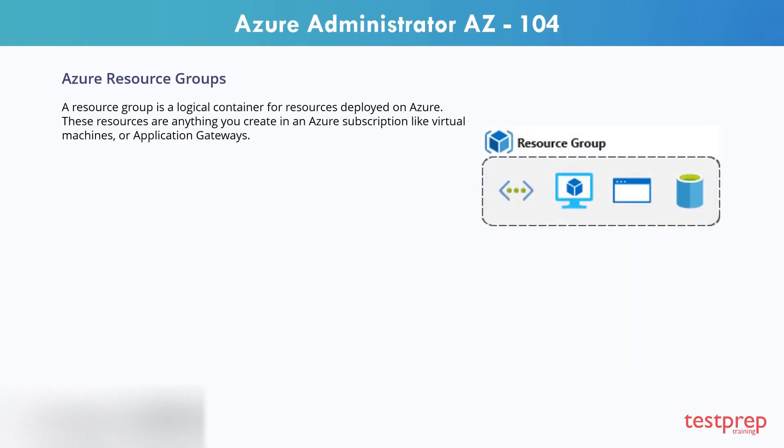Resource groups are a fundamental element of the Azure platform. A resource group is a logical container for resources deployed on Azure. These resources are anything you create in an Azure subscription, like virtual machines or application gateways. All resources must be in a resource group.